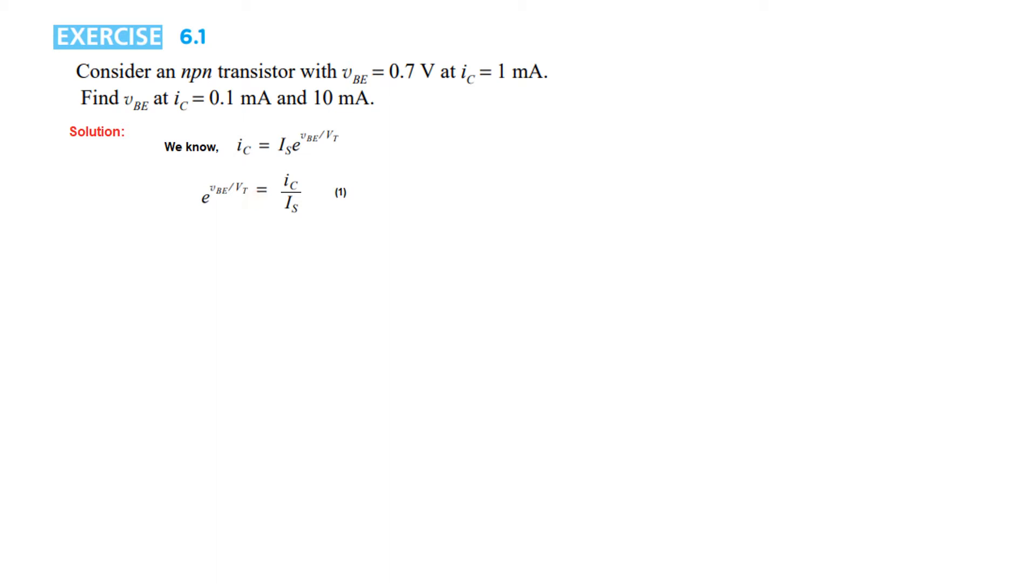Step number one: Parameters IC, VBE, and VT are known, hence we can find IS. From here we can write IS, the reverse saturation current or scale current, as IS = IC divided by e^(VBE/VT).